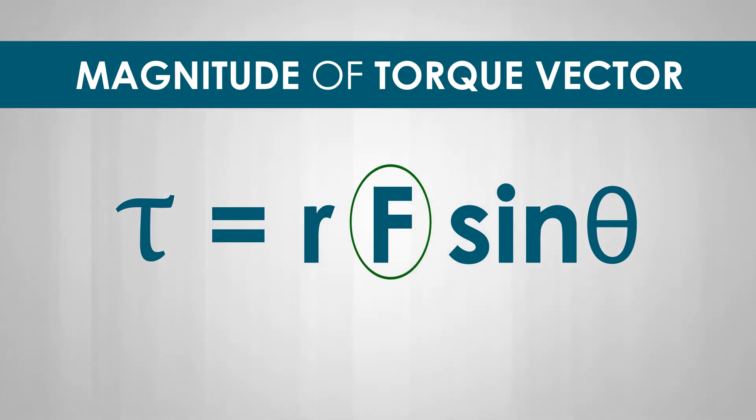F is the magnitude of the force and theta is the angle between the R vector and F vector. The unit of torque is Newton meter.